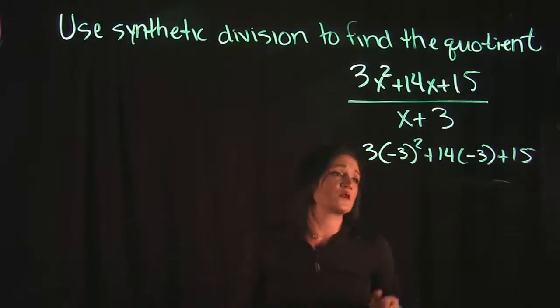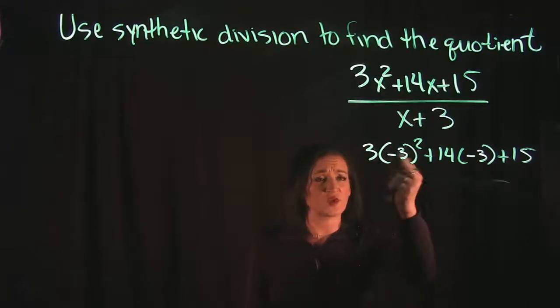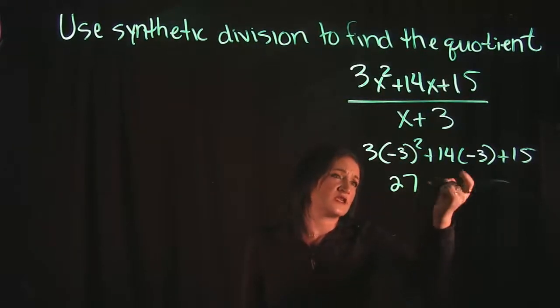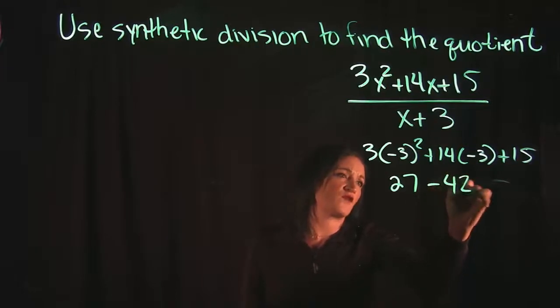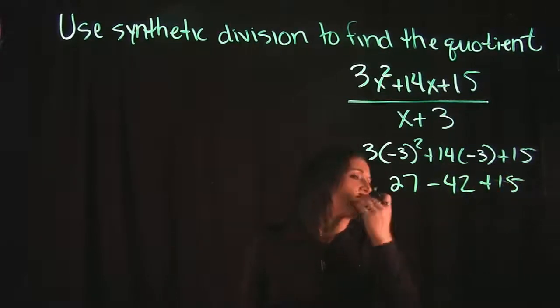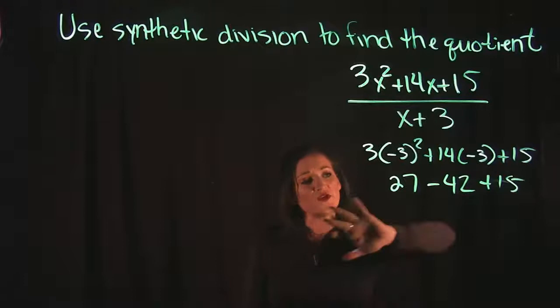So real quickly, if we were going to simplify this: negative 3 squared is 9 times 3 is 27, 14 times negative 3 is negative 42, then you have that plus 15 at the end. If you calculate this, you actually get a 0.